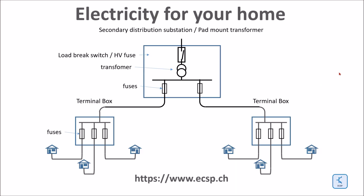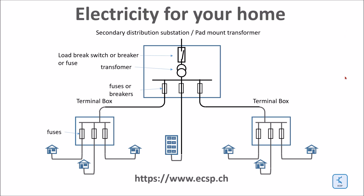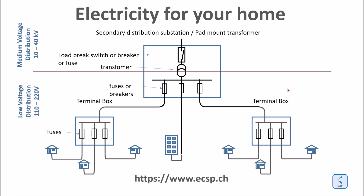In larger cities there are hundreds of terminal boxes. They are bundled and connected to secondary substations. Larger houses may be directly connected to the secondary substation. The secondary substation connects the low-voltage distribution grid to the medium-voltage distribution grid. Therefore there is a transformer, some low-voltage fuses or breakers, and a medium-voltage load-break switch or high-voltage breaker. The secondary substation builds the bridge between the low-voltage distribution of a couple of hundred volts up to the medium-voltage distribution between 10 and 40 kilovolts.